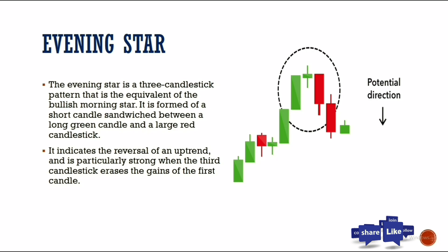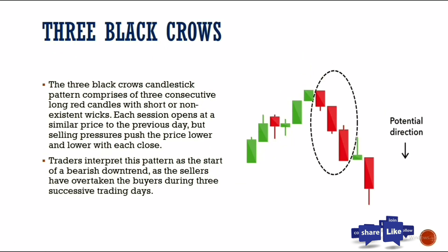The evening star is the bearish equivalent of the morning star. It also has a small candle between a strong bullish up candle and a strong bearish down candle. Anytime you see this candle forming at the top, it indicates a strong reversal pattern to the downside.